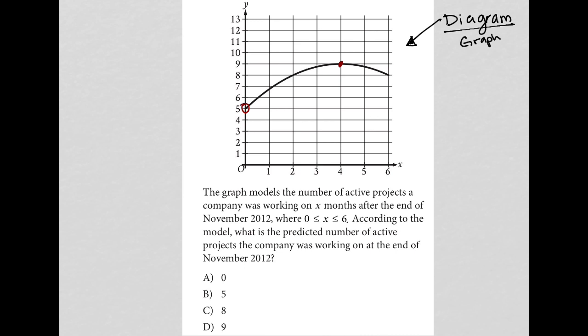Let's see what the question is actually asking before I continue on. So the question says, the graph models the number of active projects a company was working on x months after the end of November 2012. Okay.